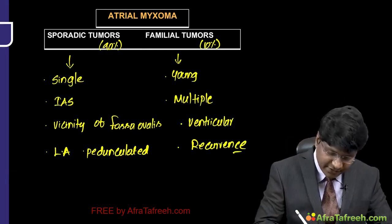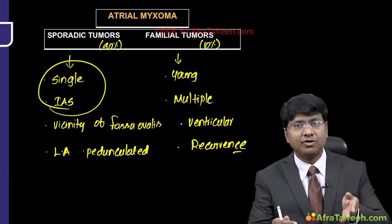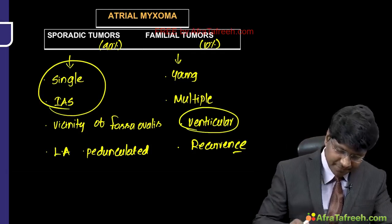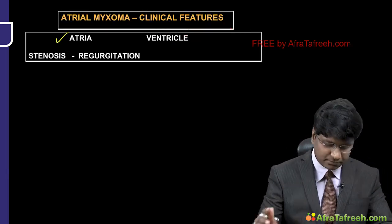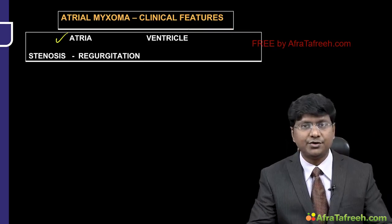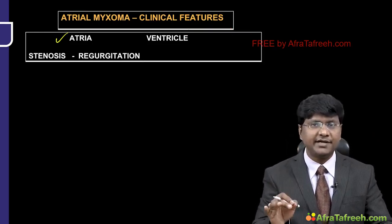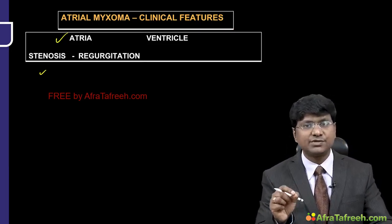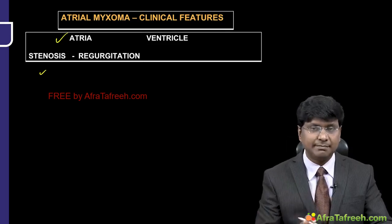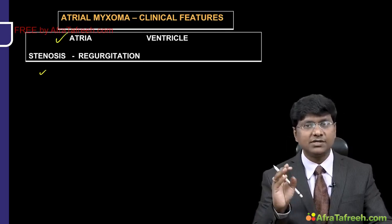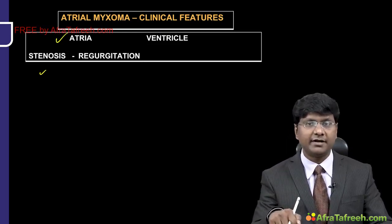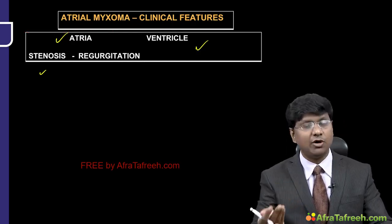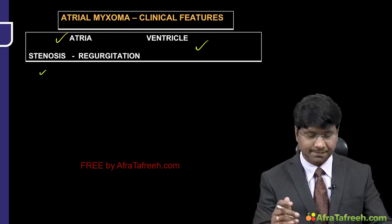If a tumor is present within the atria, it can obstruct the inflow tract of the ventricle. Ventricular tumors cause obstruction of the ventricular outflow tract, producing obstructive signs and symptoms. Atrial myxomas originating from the interatrial septum can prolapse onto the mitral valve orifice, giving the picture of mitral stenosis.